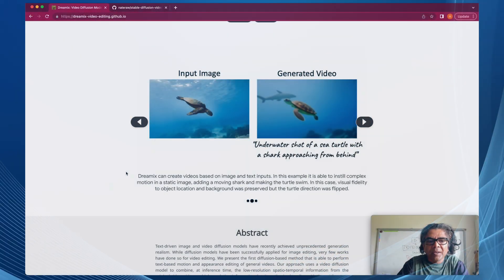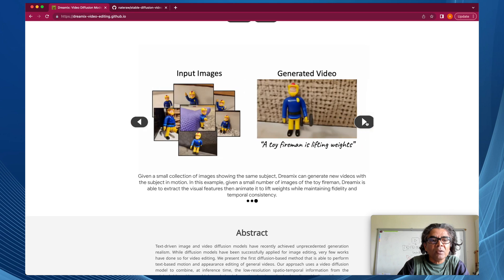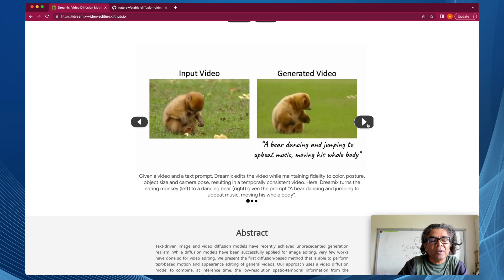Here is the input image and here is the generated video after a prompt has been applied. This is another video where a bunch of images are related to a toy fireman and a prompt is added to make a new video based on the prompt by combining this input video.